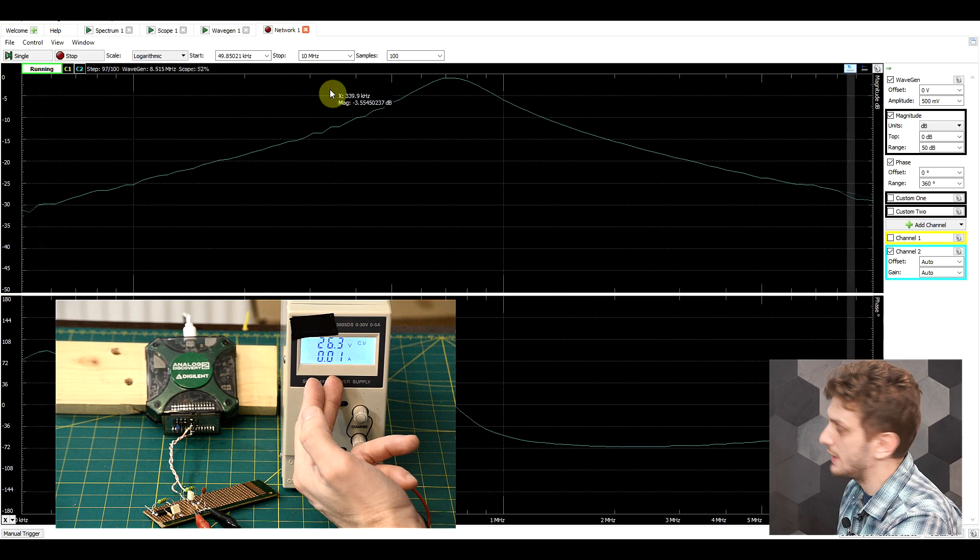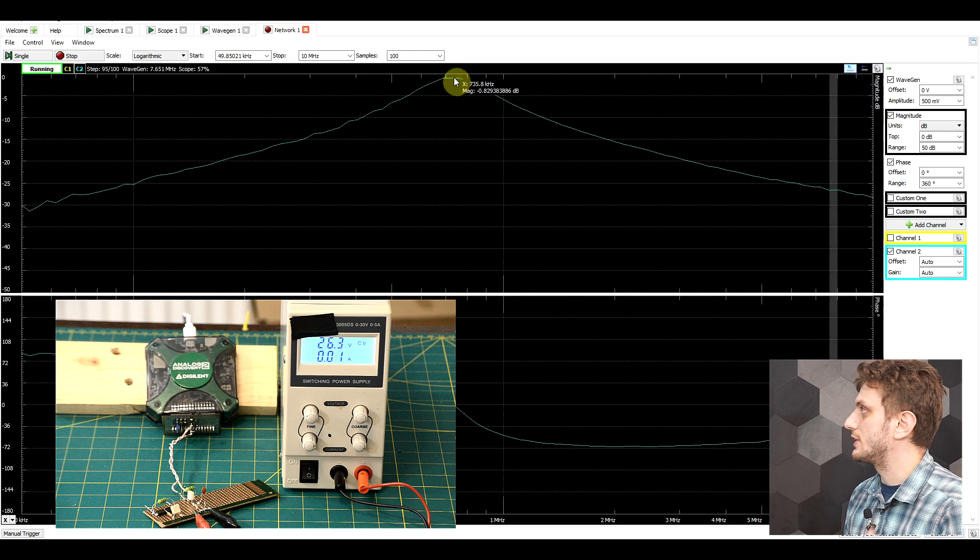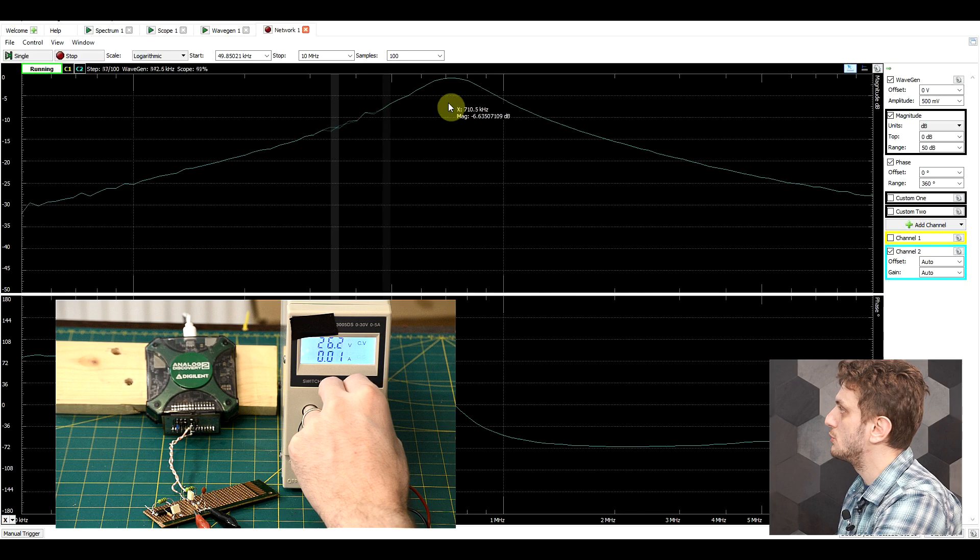So now if I turn to my supply and start to increase the DC bias voltage, we can see that our peak is starting to move to the right. So slowly it's moving based on the applied DC voltage. So at the maximum voltage that my supply can supply, 26 volts, we went from the initial 350 kilohertz up to around 735 kilohertz.